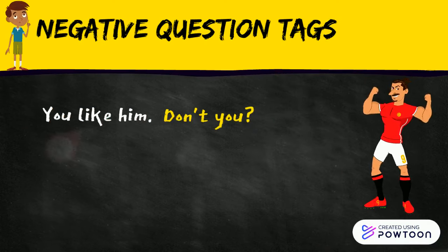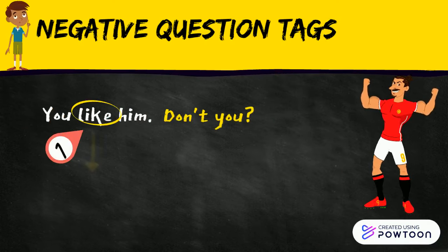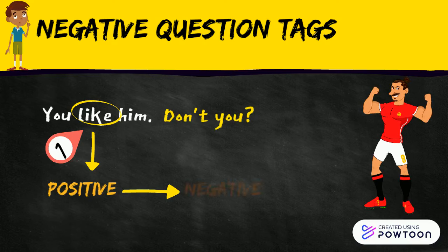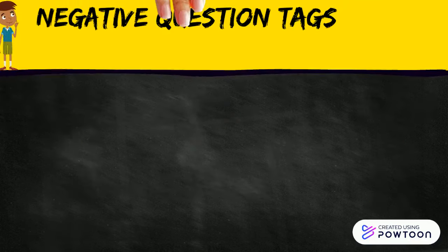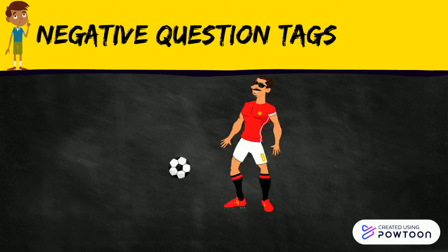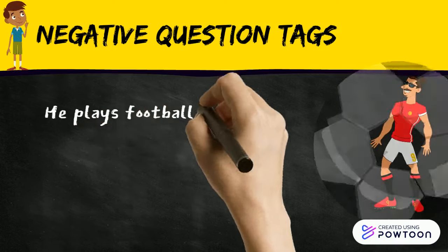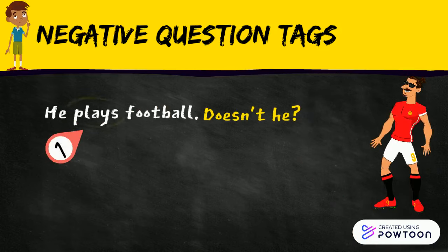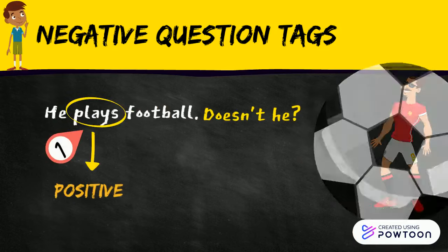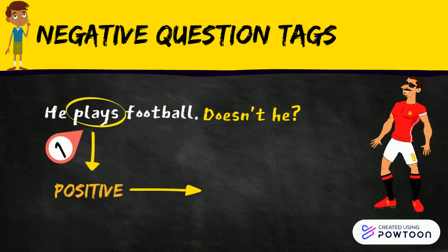When the sentence has other regular verbs in the positive form, we use 'don't' or 'doesn't' to make the question tags. An example is: 'You like him, don't you?' Here is another example with a different verb: 'He plays football, doesn't he?'